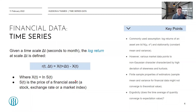Let's make some brief comments about the data that we're looking at. It's financial time series data, and the definition goes something like this: we're given a time scale delta T, which could be seconds to a month. We define a variable called the log return at scale delta T, given as R_T(delta T) = X(T + delta T) - X(T), where X is the logarithm of S(T), the price of some financial asset — a stock, an exchange rate, or a market index.